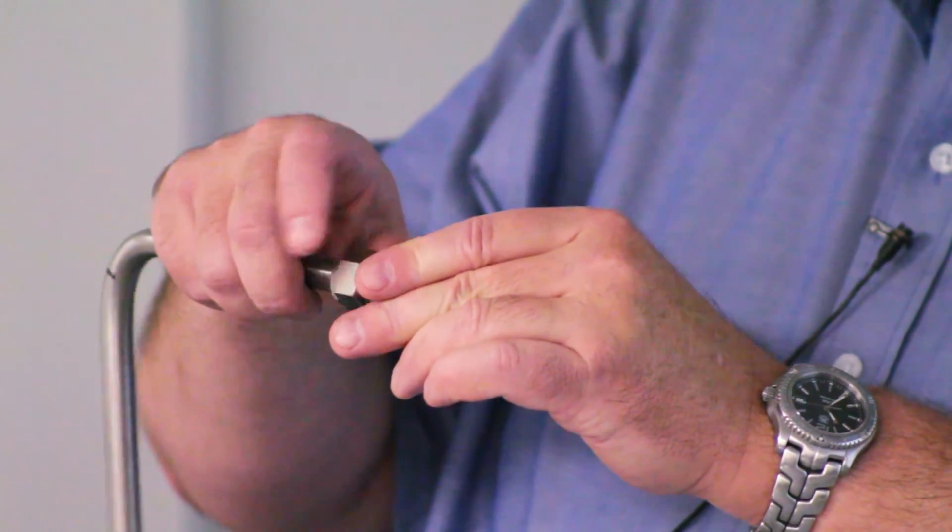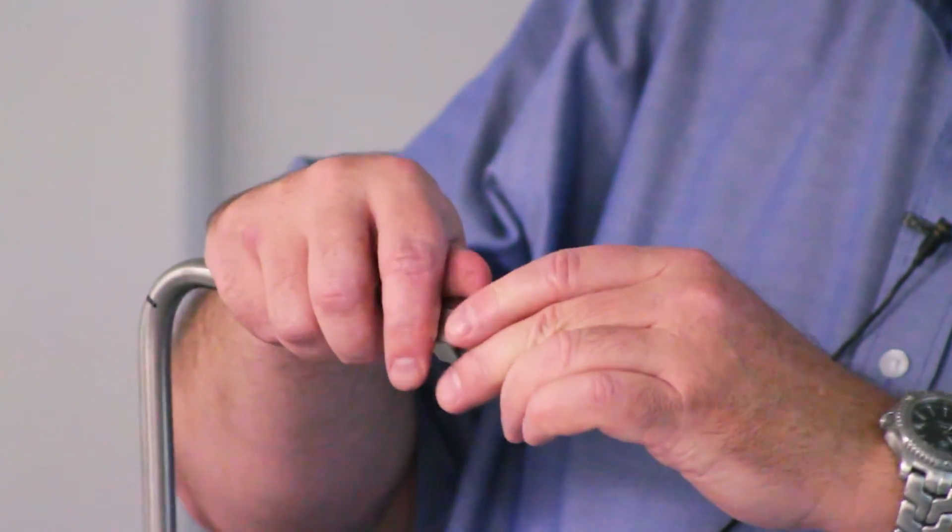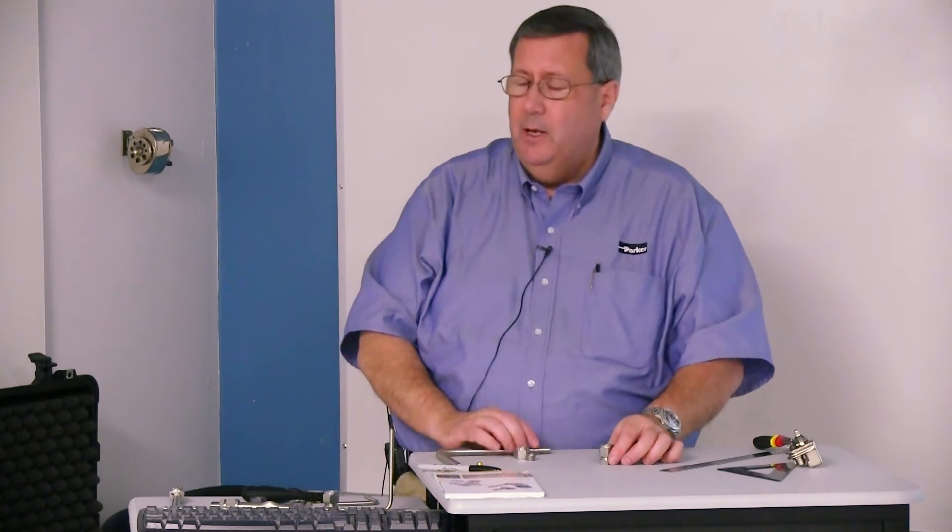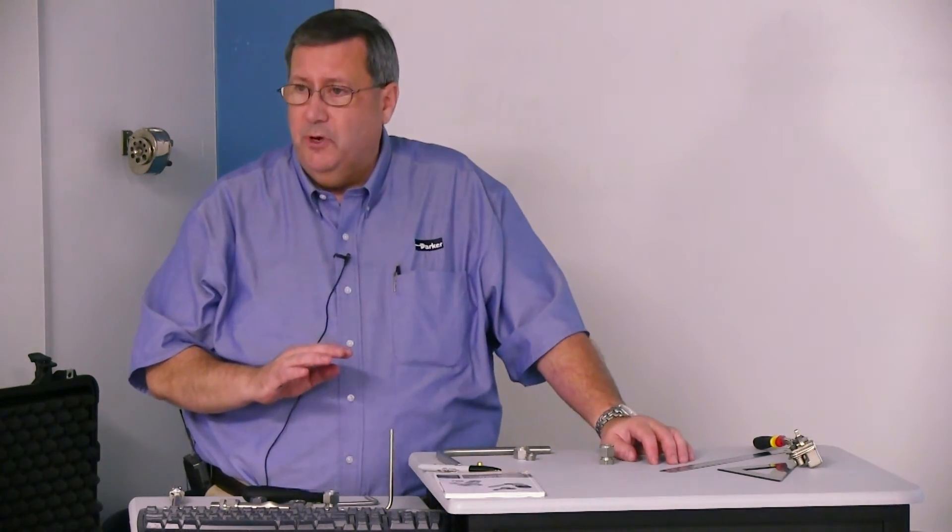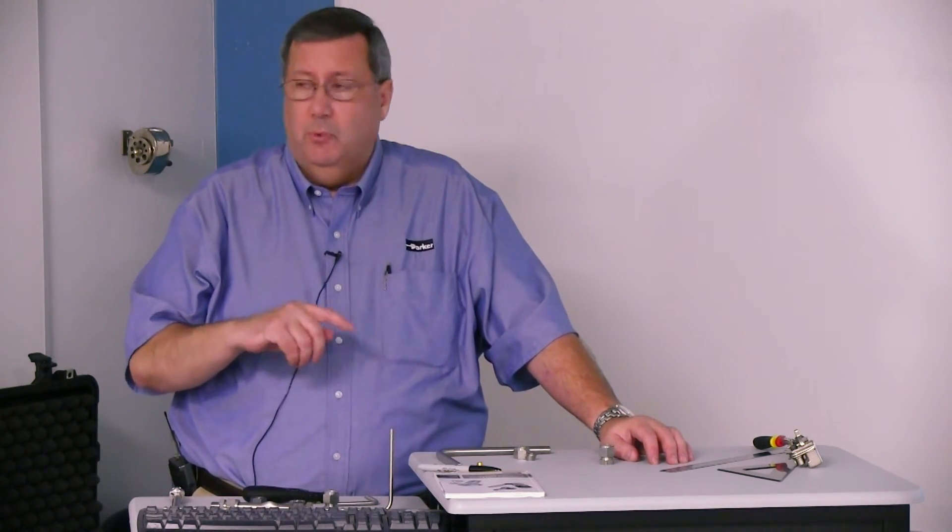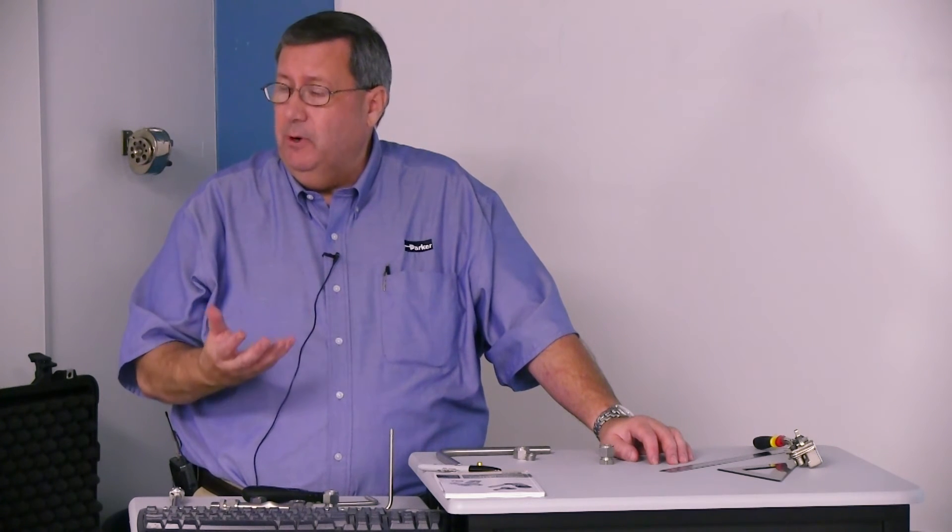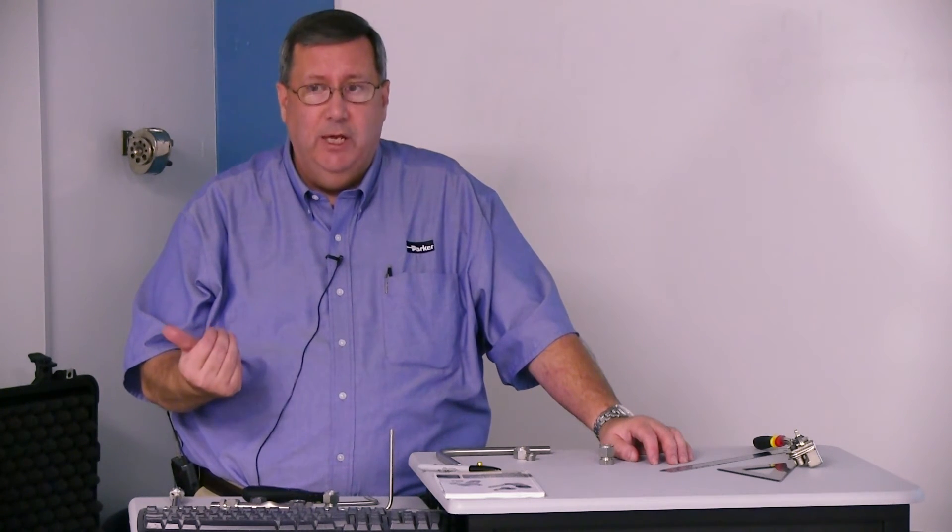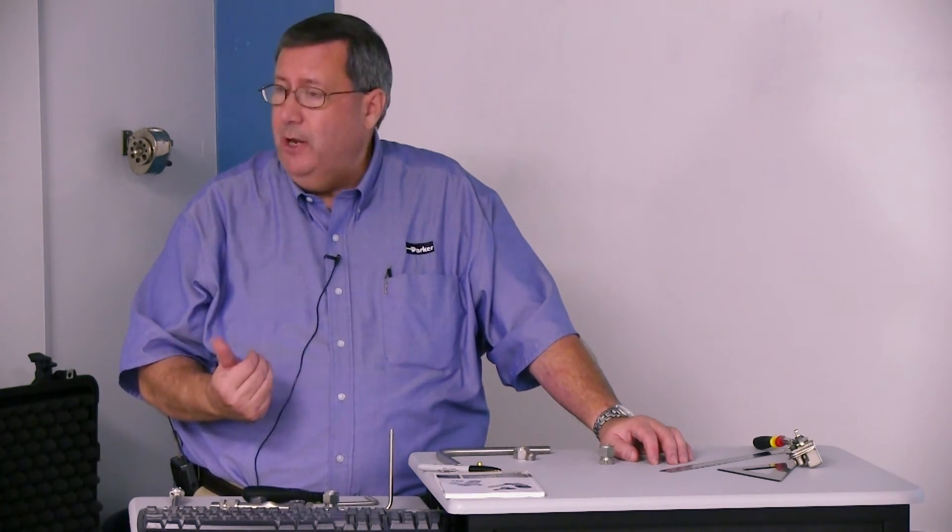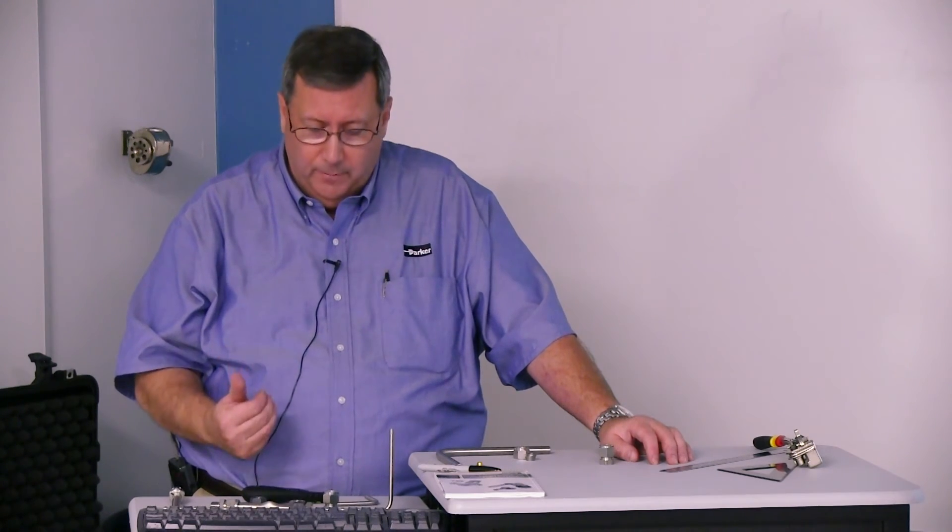Then you know the ferrule is in the right orientation. The most common mistakes with a two-ferrule system are putting the rear ferrule in backwards or leaving the rear ferrule out. In both cases, you're going to have leakage, and if you go to high pressure, you're going to have a blowout. That's very important to learn.